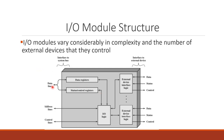Now for IO module structure — if you want to use a mouse or printer, we use the external device with interface logic. Each device has device-specific logic. The connection uses three lines: data line, status line, and control line — these are the data, status, and control lines that connect to the peripheral device.